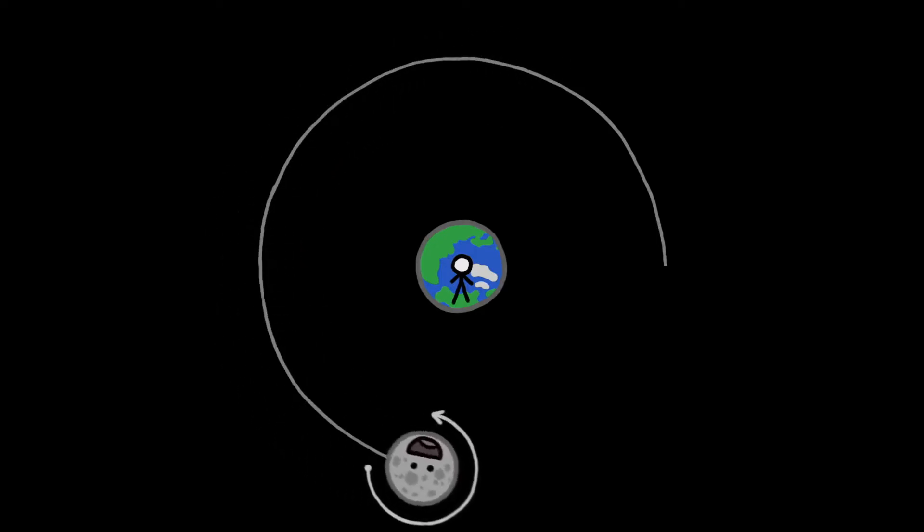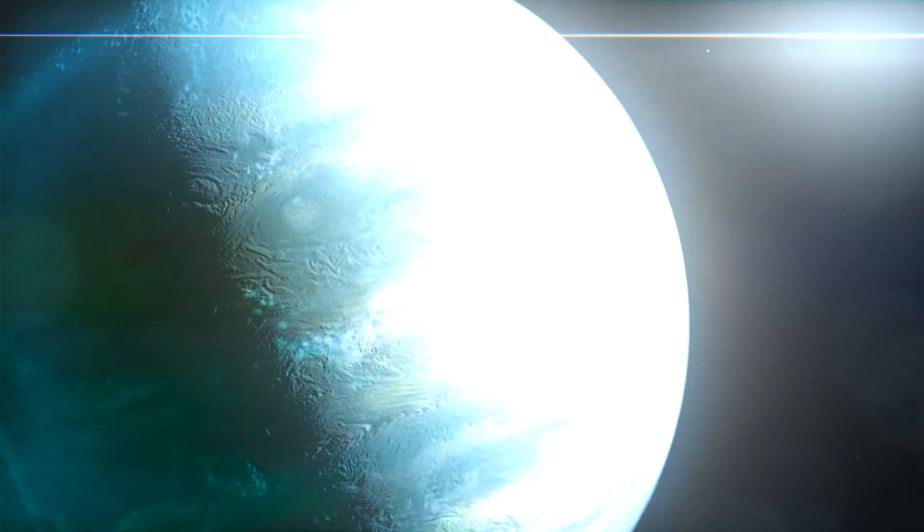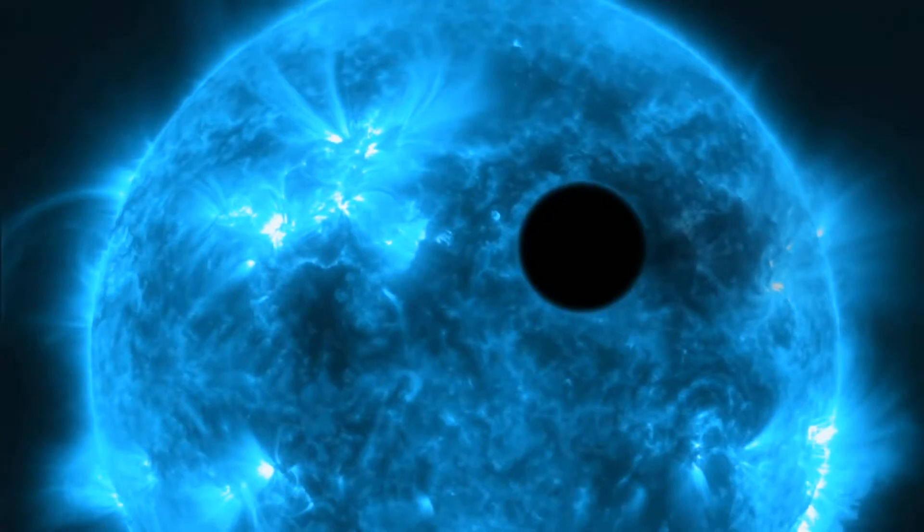This is the case with the Earth's Moon, and why we can only ever see one side of it. Because Kelt 9b is tidally locked with its star, one side of the planet is trapped in constant, blinding daylight, while the other side is trapped in eternal night.